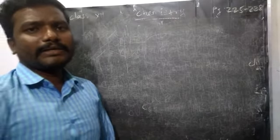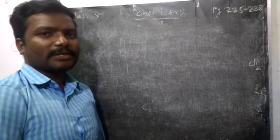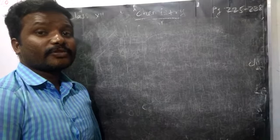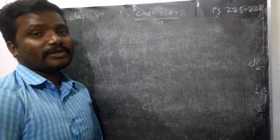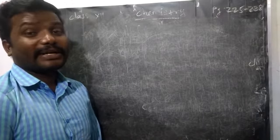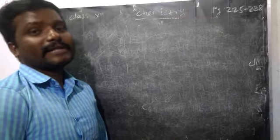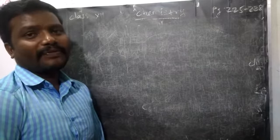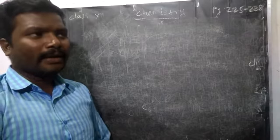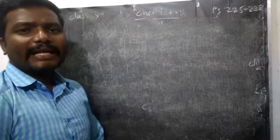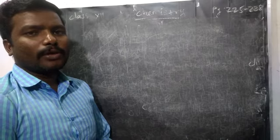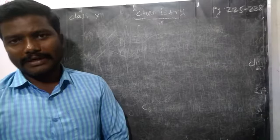Some physical properties: isocyanide is also a colorless liquid. But we have studied that cyanide has a sweet smell. Here, isocyanide has an unpleasant, irritating smell. It is also more poisonous than cyanide, but it has a lower boiling point because of less polarity. It is also sparingly soluble in water, and highly soluble in organic solvents.